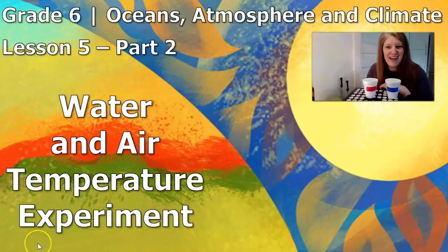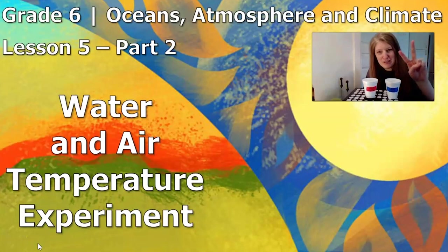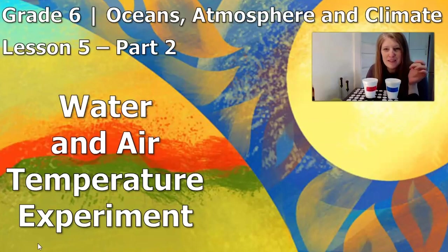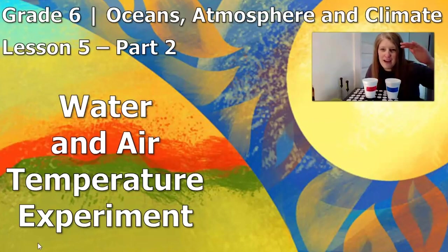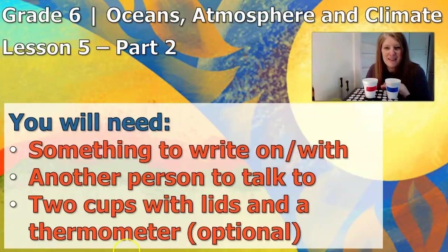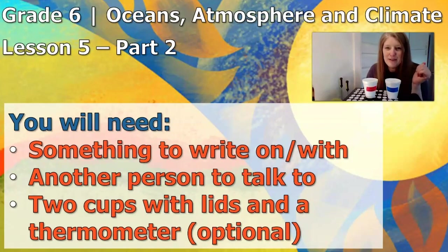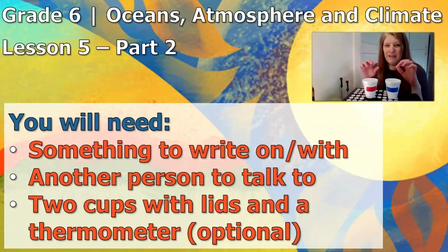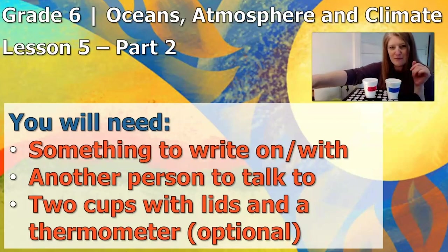Welcome to lesson five, part two — the water and air temperature experiment. We're going to collect evidence to help us understand how the temperature of an ocean current can affect the temperature of the air above the location it passes. Some things you'll need: something to write on, something to write with, and someone to talk to.